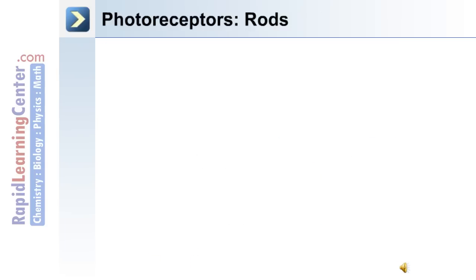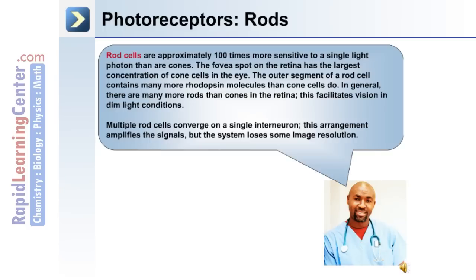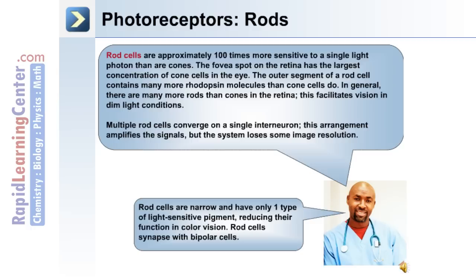There are two types of photoreceptors in the retina: rods and cones. Rod cells are approximately 100 times more sensitive to a single light photon than cones. The outer segment of a rod cell contains many more rhodopsin molecules than cone cells. In general, there are more rods than cones in the retina, facilitating vision in dim light conditions. Multiple rod cells converge on a single interneuron, which amplifies signals but reduces image resolution. Rod cells are narrow, have only one type of light-sensitive pigment, reducing their function in color vision, and synapse with bipolar cells.